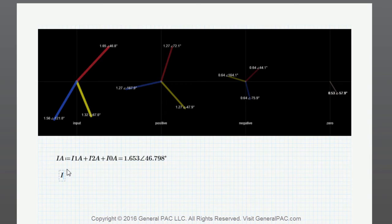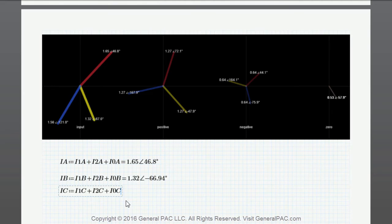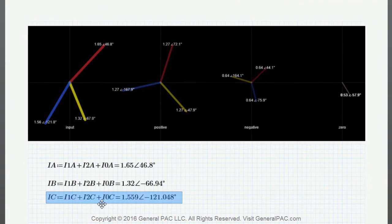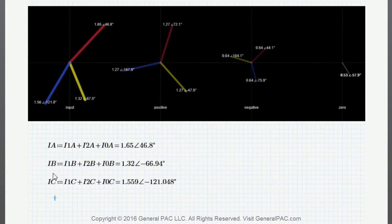Now let's do IB. IB is equal to the positive sequence component for phase B plus the negative sequence component for phase B plus the zero sequence component for phase B. And there you have it: 1.32 at negative 67 degrees, which matches our original yellow phasor. For phase C, the original phasor is equal to positive sequence plus negative sequence plus zero sequence component of phase C, and that equals 1.56 at negative 121 degrees — matching our original system phasor.